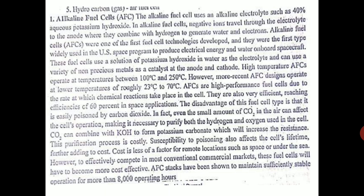The alkaline fuel cell uses an alkaline electrolyte such as 40% aqueous potassium hydroxide (KOH). In alkaline fuel cells, negative ions travel through the electrolyte to the anode, where they combine with hydrogen to generate water and electrons.